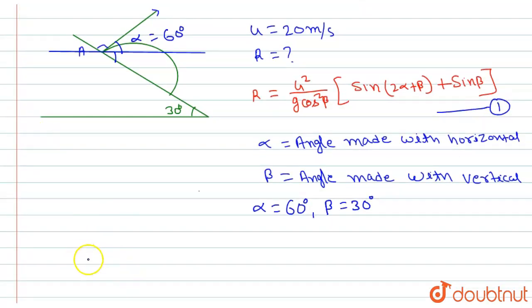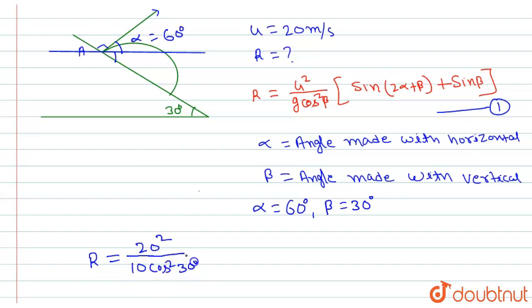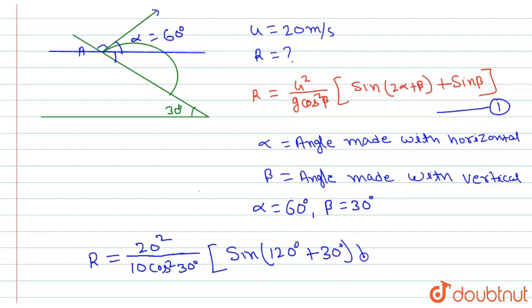So R equals U squared, which is 20 squared, divided by G — we take G as 10 — multiplied by cos squared of beta, which is cos squared 30 degrees. And then multiplied by sin of (2 alpha plus beta), where 2 alpha is 2 times 60 degrees, which equals 120 degrees, plus 30 degrees, and minus sin beta, which is sin 30 degrees.